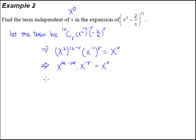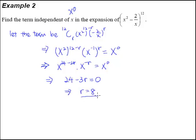Using the law of indices, we can expand the powers: x to the power of 24 minus 2r, multiplied by x to the power of negative r, is equal to x to the power of 0. By comparing the powers, we can say that 24 minus 3r is equal to 0, and therefore r is equal to 8. What this tells us is that when r is equal to 8, we will have x to the power of 0. It's that simple.